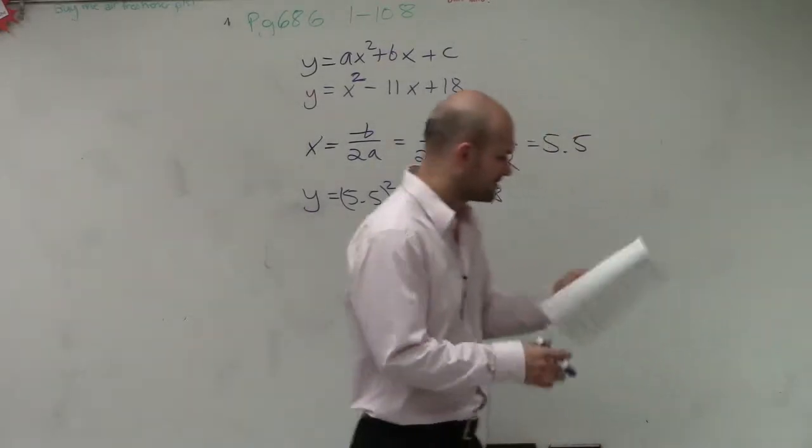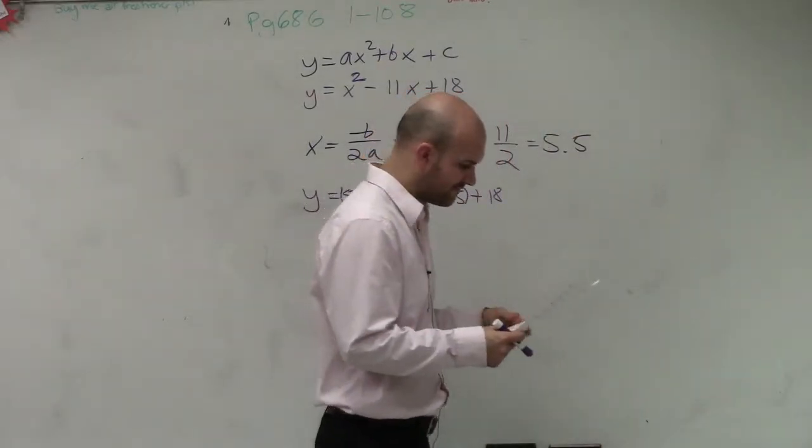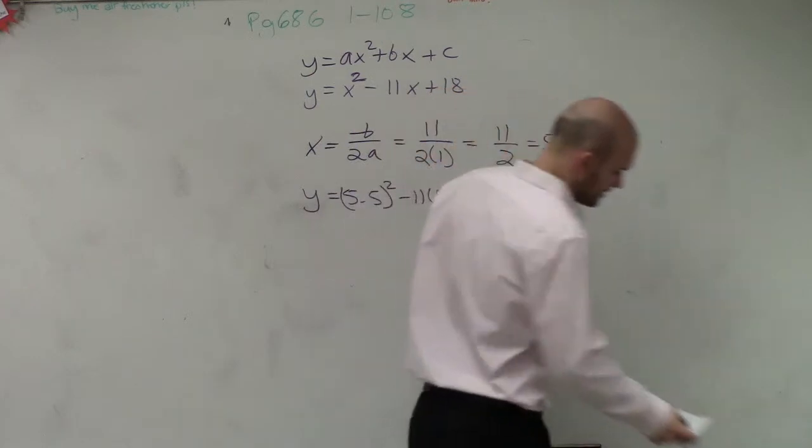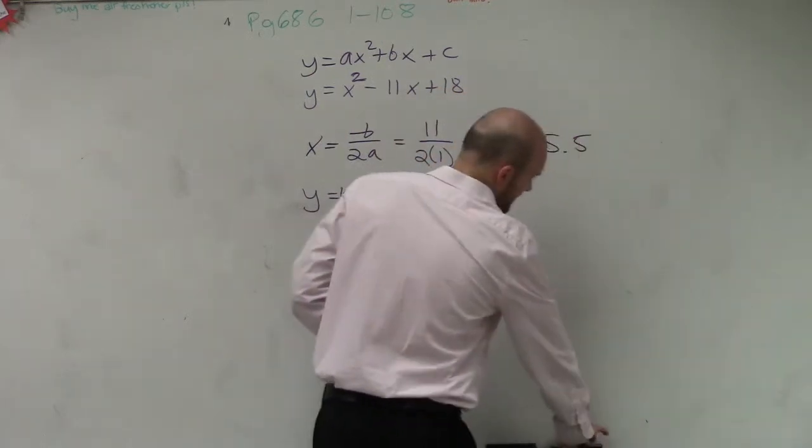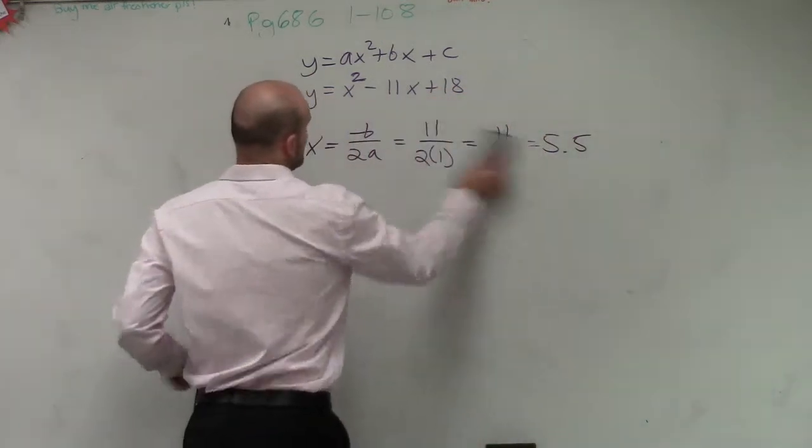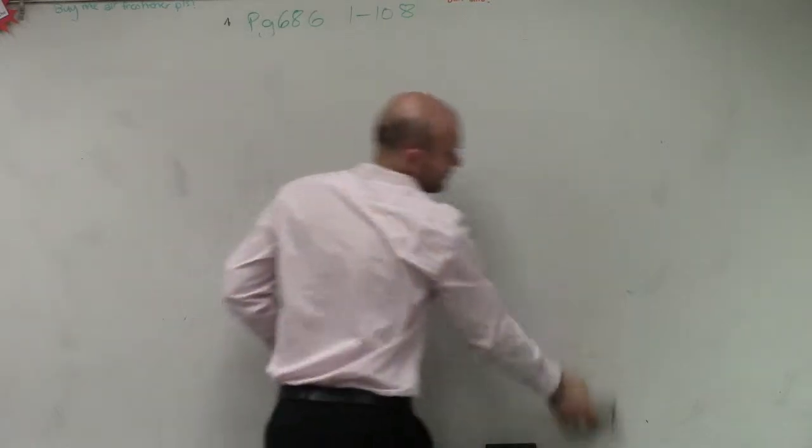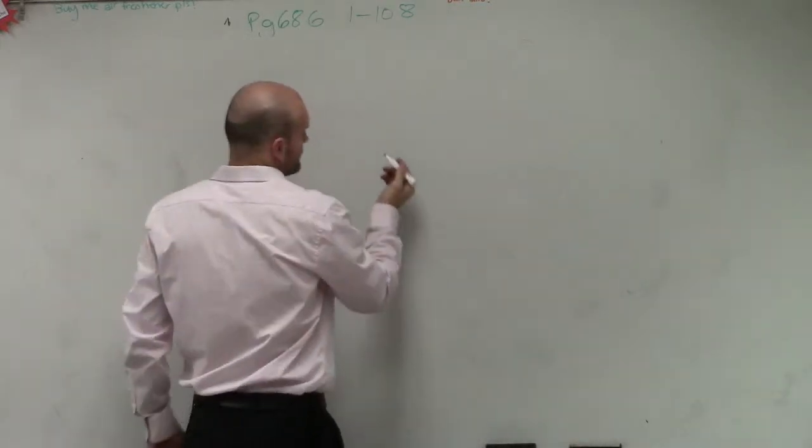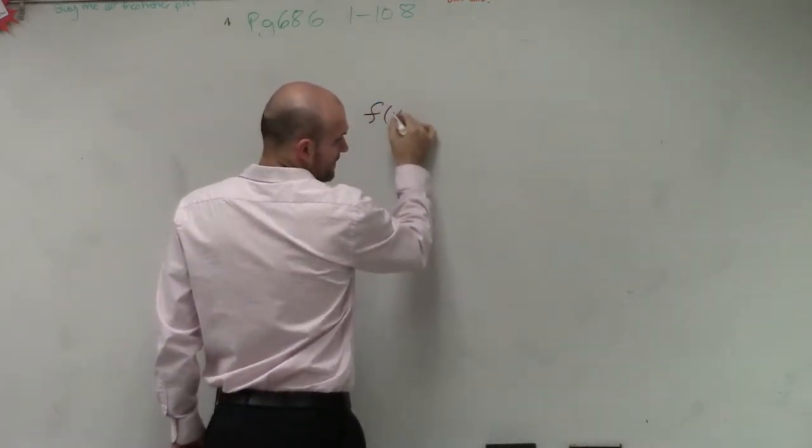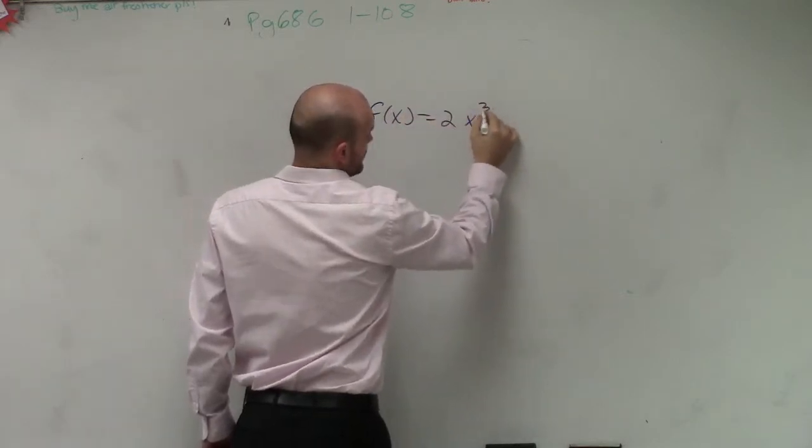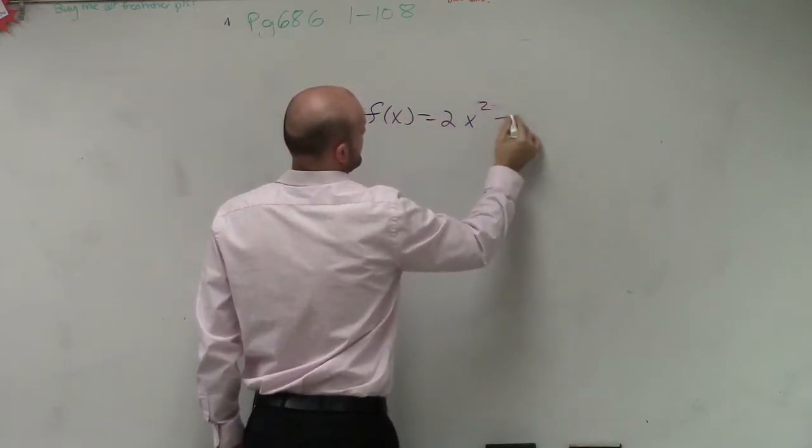The next problem that someone asked me to do was find the inverse of f of x equals 2x squared minus 3. This was number 9. So I have f of x equals 2x squared minus 3.